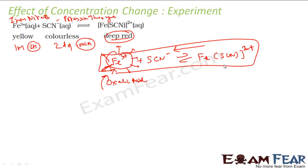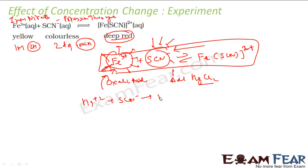Now let's try to reduce the concentration of potassium thiocyanate (SCN⁻). You can add HgCl₂ to the system. HgCl₂ reacts with potassium thiocyanate to form Hg(SCN)₄²⁻. This decreases the concentration of SCN⁻, so the reaction moves in the reverse direction and you will see the red color diminish.